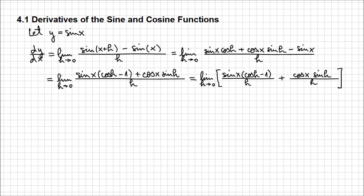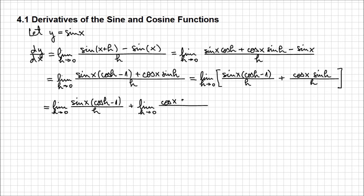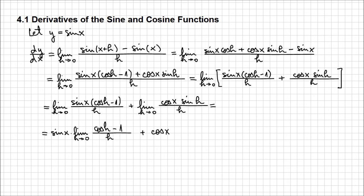Based on the properties of the limit, we know that the limit of a sum is the sum of the limits. So we have the limit when h approaches 0 of sine of x times cosine of h minus 1 over h, plus the limit when h approaches 0 of cosine of x times sine of h over h. Since the limit is with respect to h, sine of x and cosine of x can be treated as constant multiples and factored out.